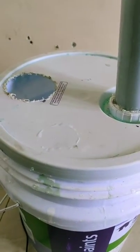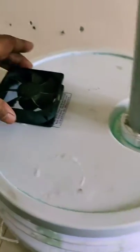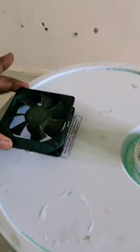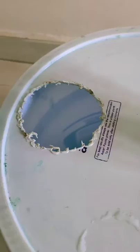First clean the can. Then you have to make holes. One hole for this fan, so just measure, make a circle and just cut like this. And you need another hole for the PVC pipe.